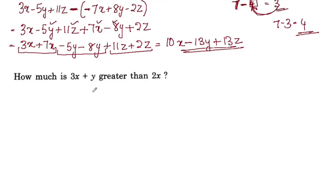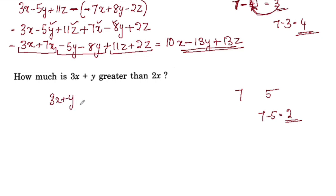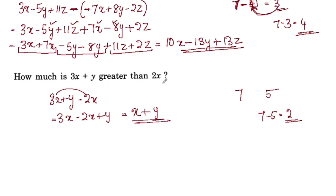How much is 3x + y greater than 2x? For example, how much is 7 greater than 5? We subtract: 3x + y minus 2x. 3x minus 2x equals x, so x + y. Therefore 3x + y is greater than 2x by x + y.